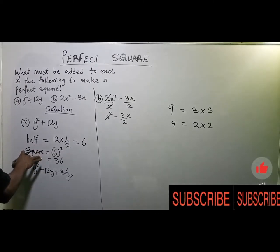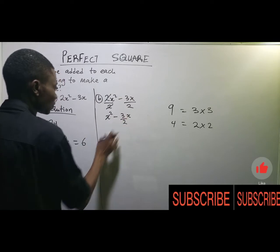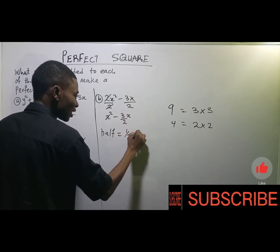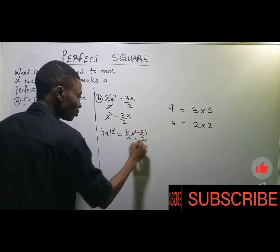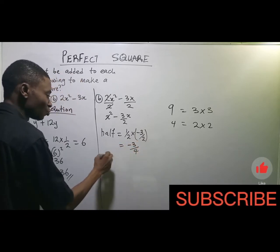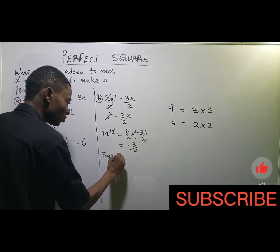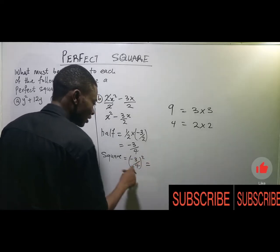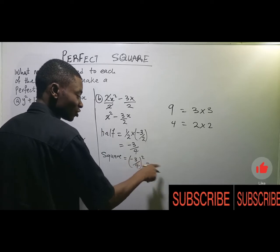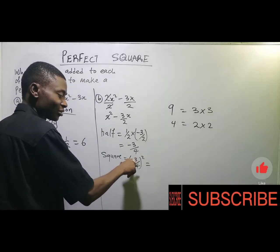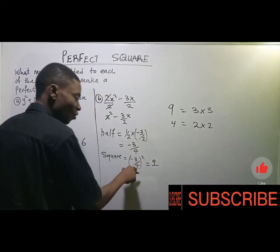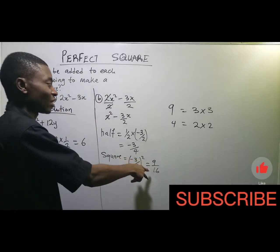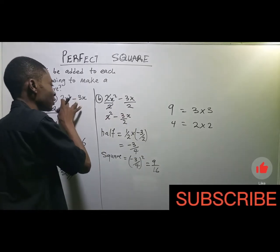Now we apply the same steps: we half the coefficient of x, which is −3/2. So we do (1/2) × (−3/2) = −3/4. Then we square it: (−3/4)² = (−3 × −3) / (4 × 4) = 9/16. Therefore, we add 9/16 to the expression to make it a perfect square.